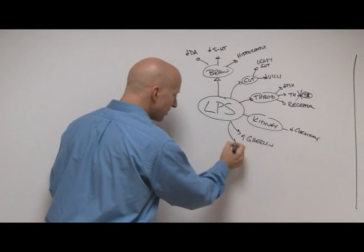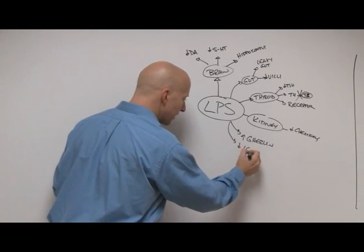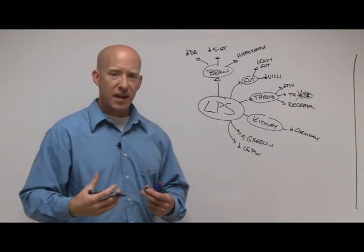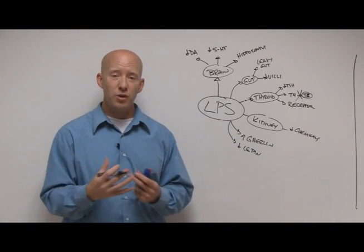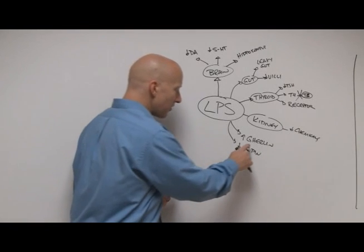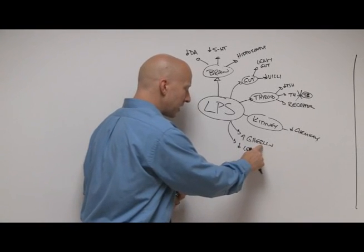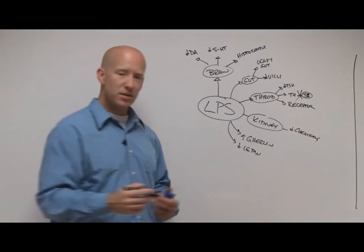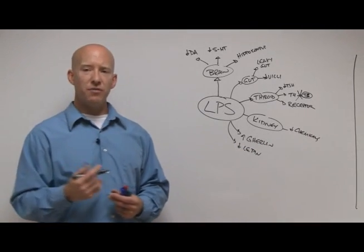Also associated with this is the other hormone called leptin. Leptin is the hormone that's secreted by fat cells in order to tell you that you're now full, that you're no longer to keep eating. So now you have increased hunger, increased appetite, increased cravings, and a decreased message being sent to your body that you are now full.